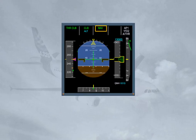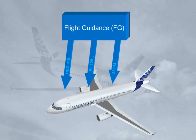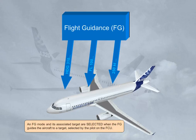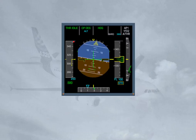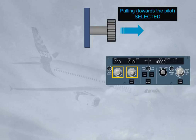In this example, Navigation mode is the managed lateral mode, which allows the FG to guide the aircraft along the lateral flight plan. Climb mode is the managed vertical mode, which guides the aircraft along the vertical flight plan. An FG mode and its associated target are selected when the FG guides the aircraft to a target selected by the pilot on the FCU. In this example, Heading mode is the selected lateral mode, and Open Descent is the selected vertical mode.